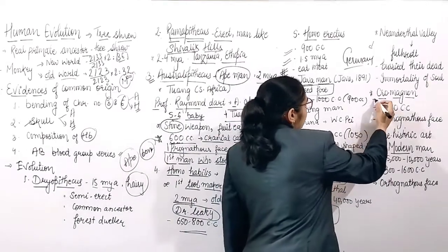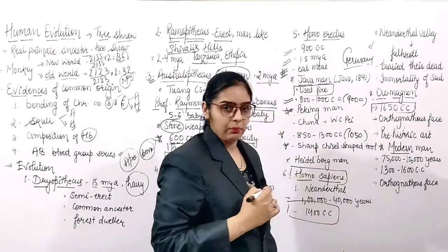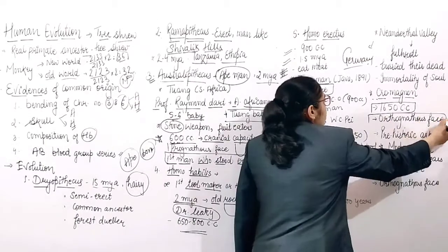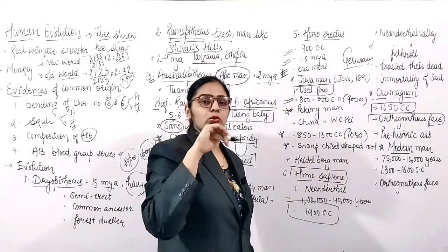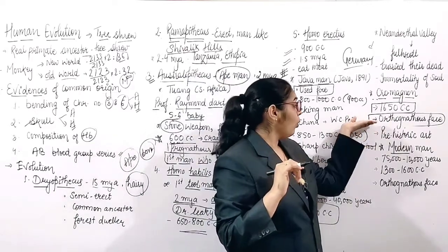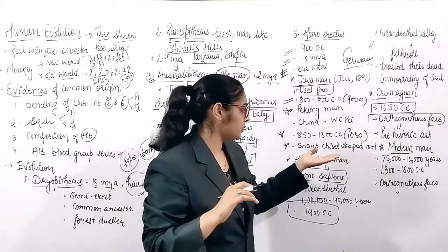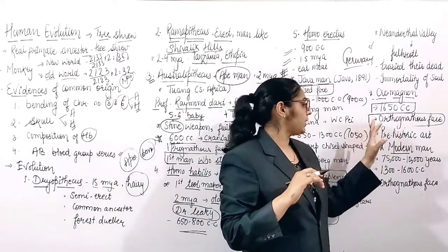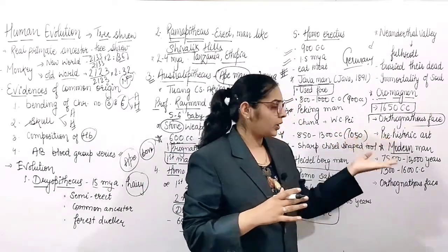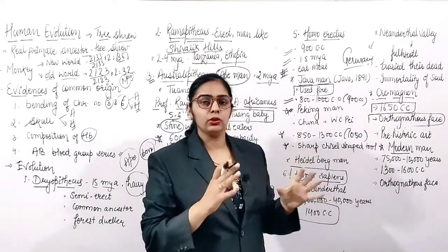The next sub-species is Cro-Magnon Man, with a cranial capacity of 1600 cc. Their face changed from U-shaped to semi-circular C-shape, known as an orthognathous face. They made paintings and drawings, and are known for prehistoric art.